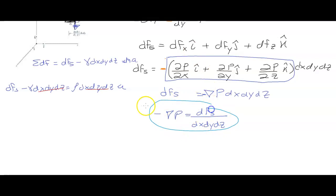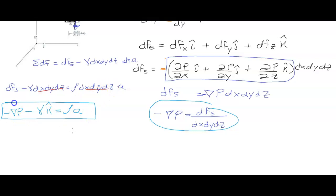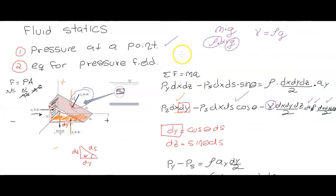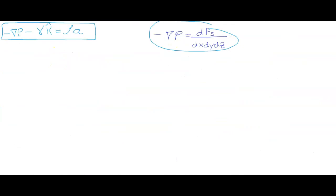We end up with: negative gradient of p minus the specific weight k-vector equals density times acceleration. This is the general equation for the pressure field — which is what I introduced at the very beginning of the video.